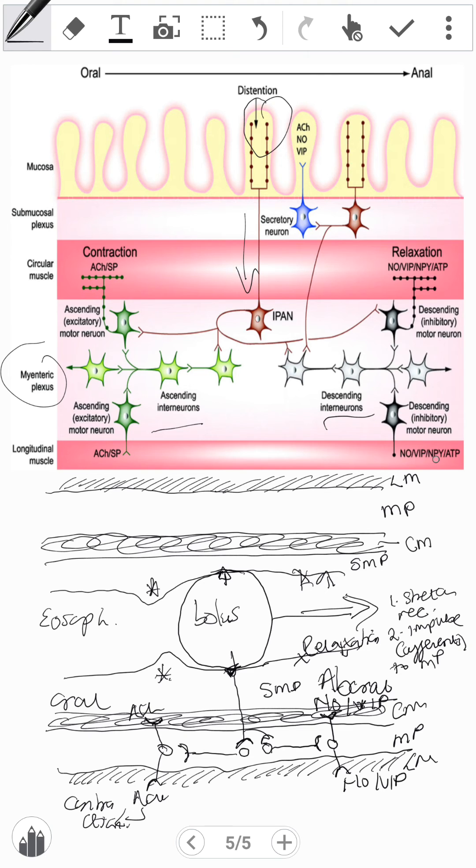So they're going to release NO and VIP on both the muscles. And on this other side, before the bolus, they're going to release acetylcholine, and thus cause contraction on this side and relaxation on this side.